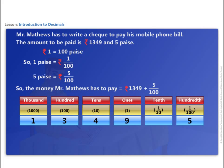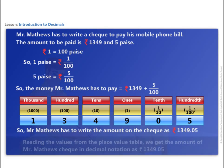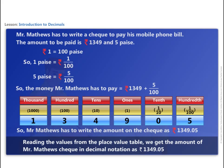Let us place the numbers in the place value table. Since we do not have any number for one tenth, we put zero for tenths in the place value table. Reading the values from the place value table, we get the amount of Mr. Matthews check in decimal notation as rupees 1349.05.